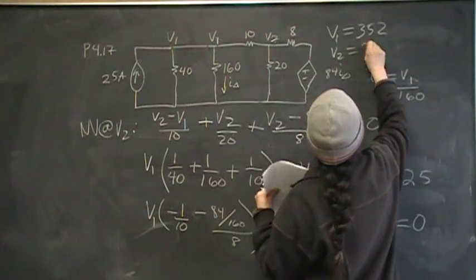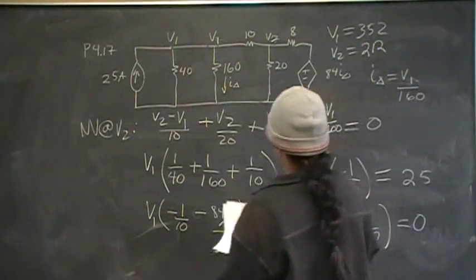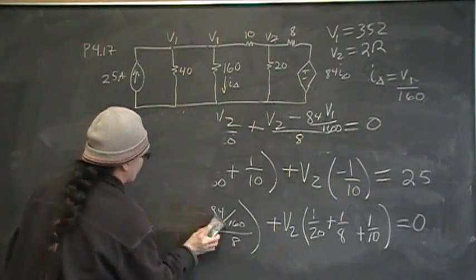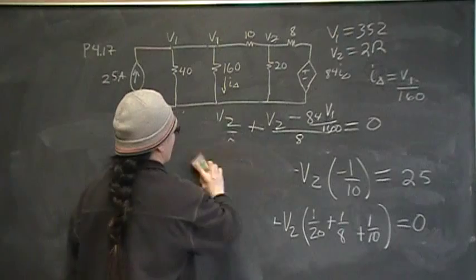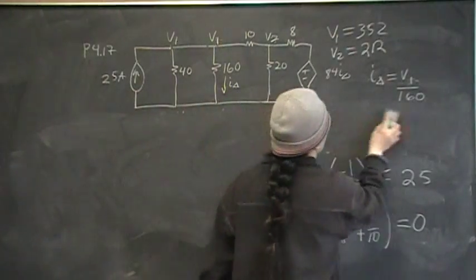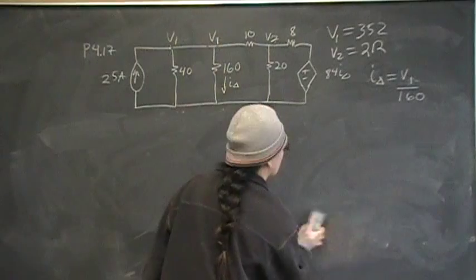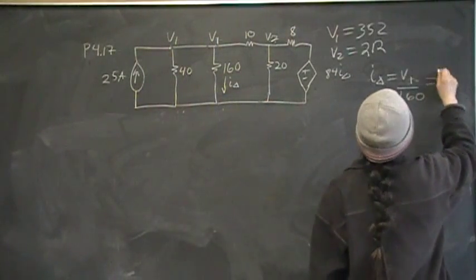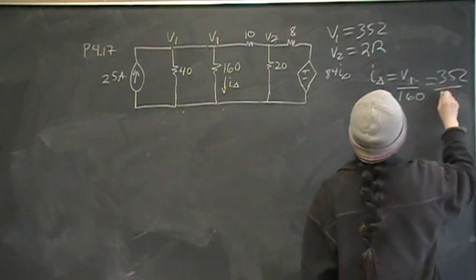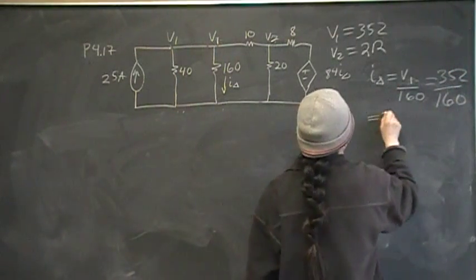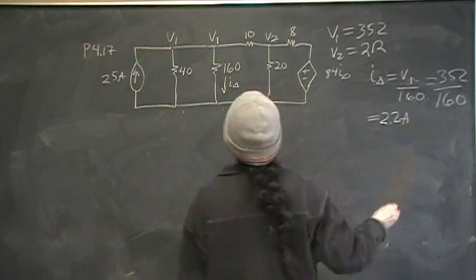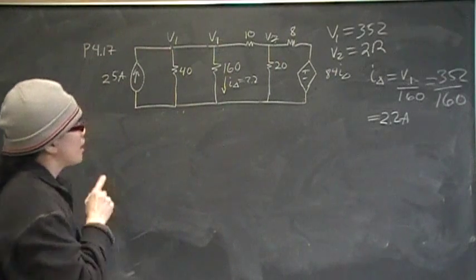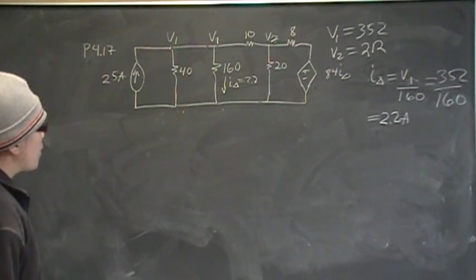Okay, now, let me erase all of this. So I delta is 352 divided by 160, which is equal to 2.2 amps. So this is 2.2.